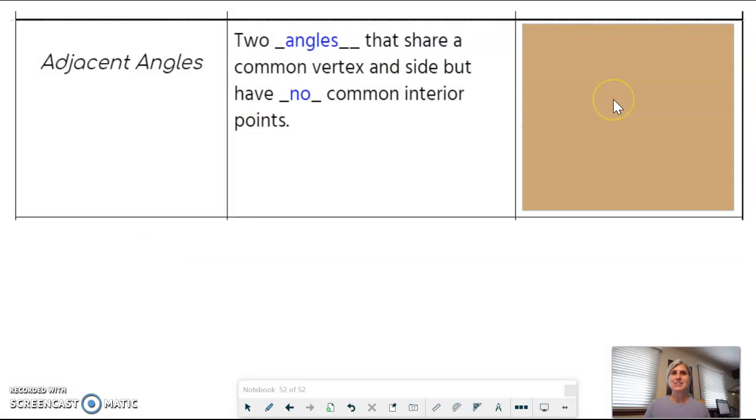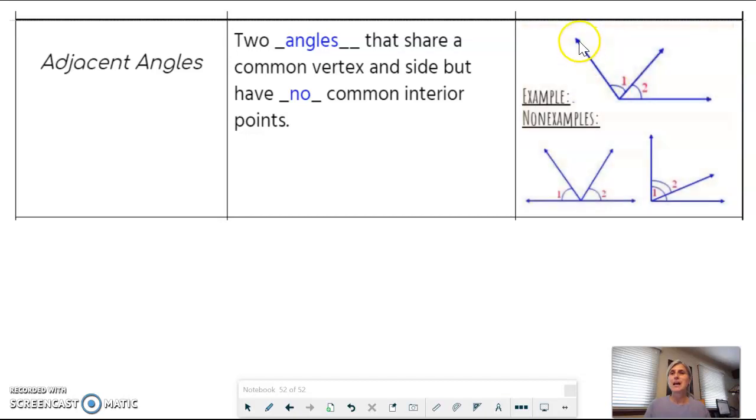Adjacent angles. Two angles that share a common vertex and a side but have no common interior points. So the top, we have an example. And I'm going to highlight here. They have a common vertex. We know that's a point. And a common ray, which is here. Common ray. They share that common side. But no common interior points. So I'm going to just highlight here and here. There are no common interior points.